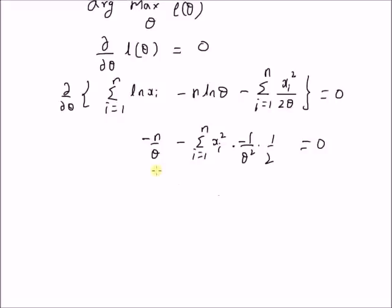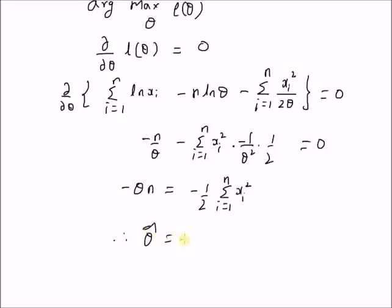By multiplying both terms by theta squared, we have minus theta times n equal to minus 1 by 2 times summation from i equal to 1 to n of xi squared. Therefore, the maximum likelihood estimator of the parameter theta is given by theta hat equal to 1 over 2n times summation from i equal to 1 to n of xi squared.